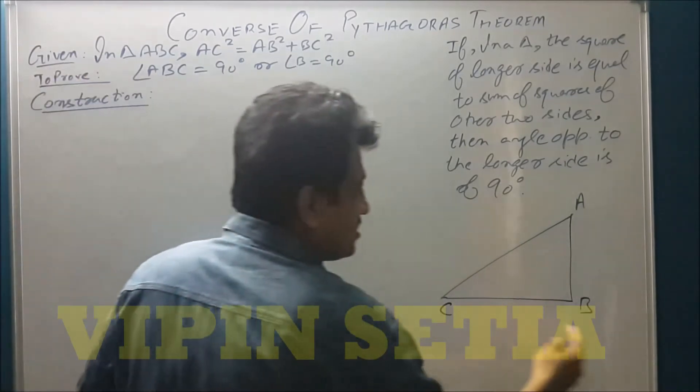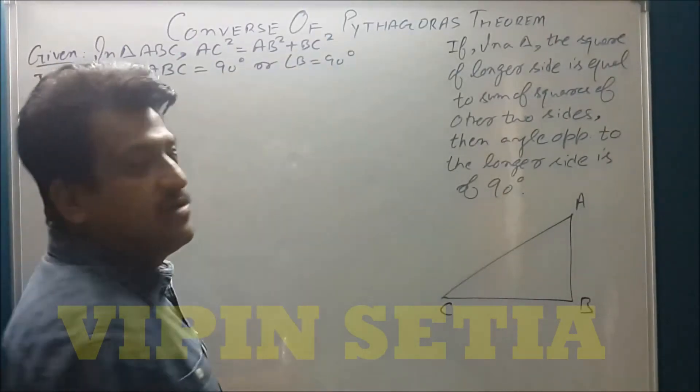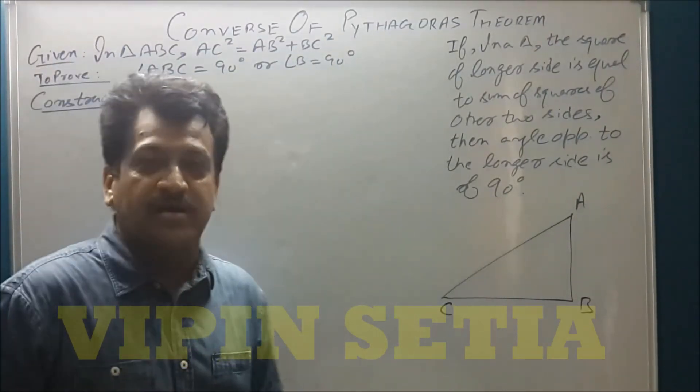We have to show that this angle is of 90 degrees, and given that AC square is equal to AB square plus BC square.